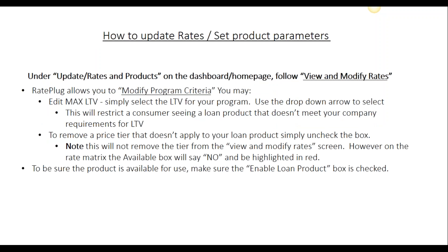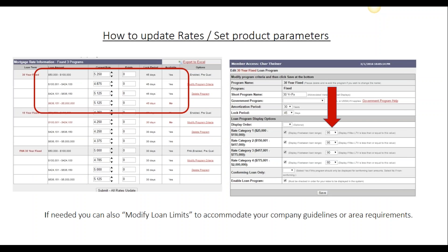To update your rates, from your main page you'll want to follow View and Modify Rates. You'll then enter in the rates by price tier. When you click on the link, the view on the left will appear. To change your rate, you'll simply highlight the box and type in your new rate, or you can use the arrows to the right, and that will change your rate up or down by an eighth.